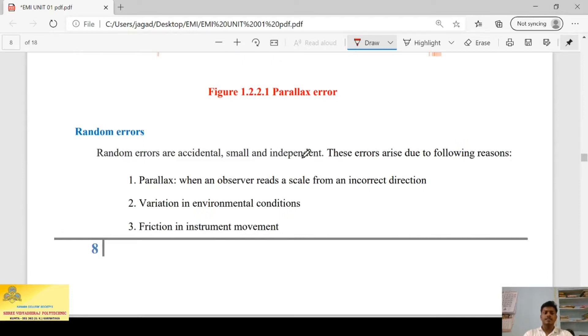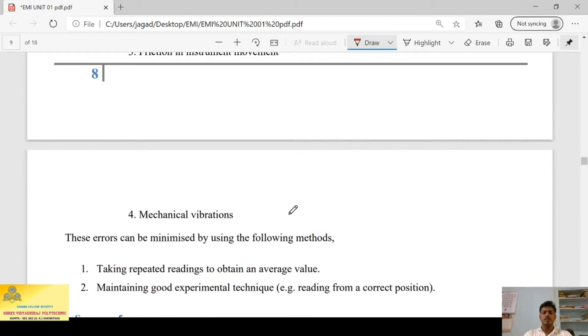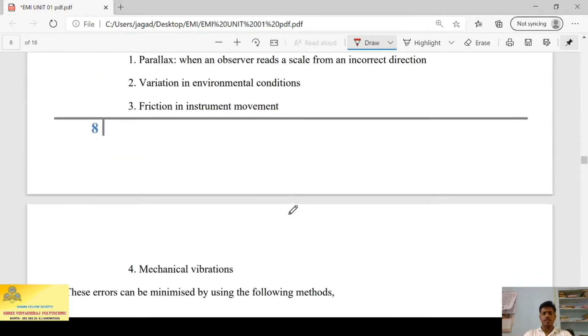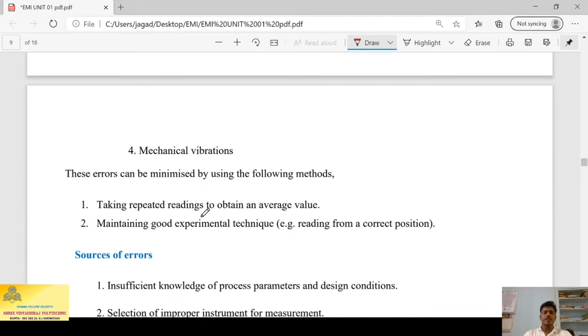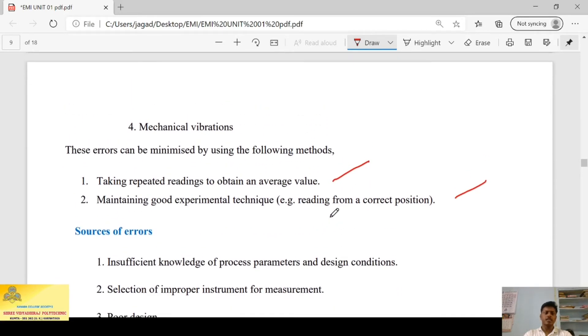Next we have random errors. Random errors are accidental, small, and independent. These errors arise due to following reasons: parallax error, variation in movement condition, frictions in instrument movement, or mechanical vibrations. Any of these four can be a reason to create random errors. How we can eliminate this random error? By taking repeated readings to obtain the average value. We should not restrict also to take a single value. We have to take number of values and observe the behavior of the instrument. And the second one, maintaining good experimental technique. These techniques or methods can avoid the number of errors.